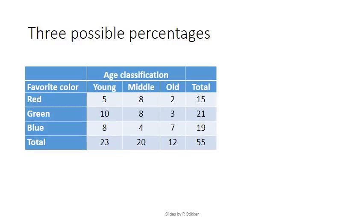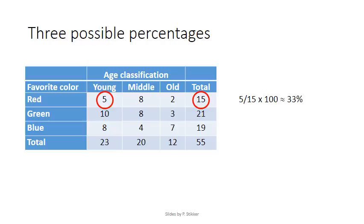Besides the absolute frequencies, sometimes the relative frequencies or percentages are also added in a cross table. Since we have three types of totals — the row totals, the column totals, and the grand total — there are three different ways of calculating the percentages. One method is to use the row total. For example, the row total of red is 15. If we want to know the percentage of young people who have red as their favorite color, we get 5 over 15 times 100, which is 33 percent — meaning 33 percent of those with red as their favorite color are young people.